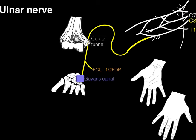Once reaching the hand, the ulnar nerve traverses Guyon's canal, a small canal in the medial proximal part of the hand near the pisiform bone. It then gives rise to cutaneous branches distributing to the pinky finger, the ulnar half of the ring finger (digit four), and both the anterior and posterior parts of the medial aspect of the hand.